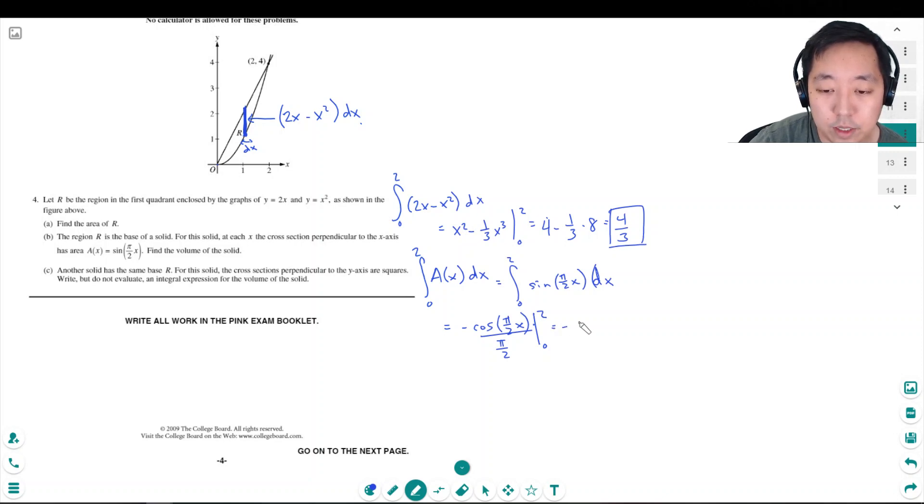That's negative 2 over π times cosine of π minus cosine of 0. Negative 2 over π times, cosine of π is negative 1, cosine of 0 is 1. So that's negative 2 over π times negative 2. That's equal to 4 over π.